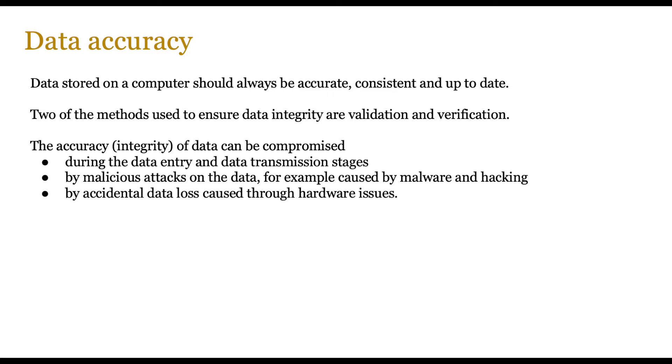The accuracy or integrity of the data can be compromised in a number of different ways. For example, during the data entry and during data transmission stages, it can be compromised by malicious attacks on the data, for example, caused by malware and hacking, and by accidental data loss caused through hardware issues or through human error. All of these factors can ensure that the data that you're about to enter or transmit isn't as accurate as it should be.